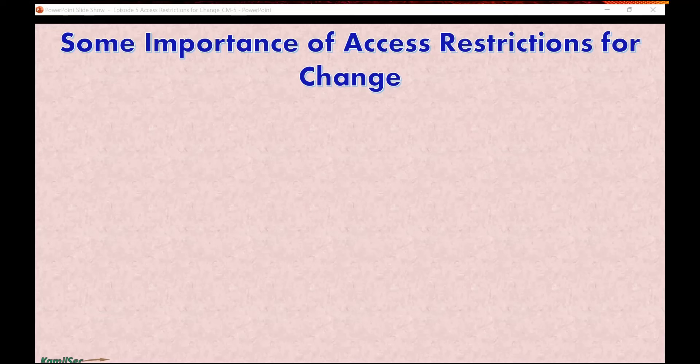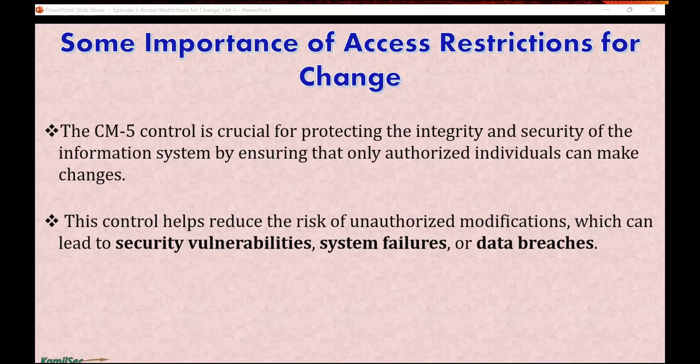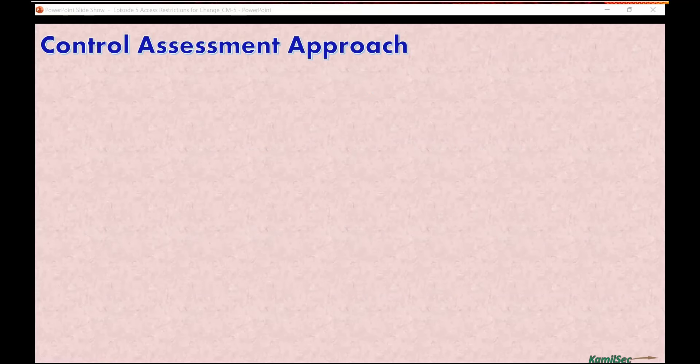The CM5 control is crucial for protecting the integrity and security of the information system by ensuring that only authorized individuals can make changes. This control helps reduce the risk of unauthorized modification, which can lead to security vulnerabilities, system failures, and data breaches. It also reduces the risk of security incidents caused by unauthorized changes.